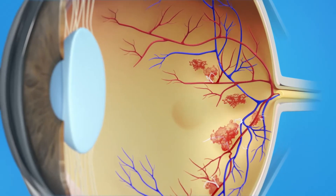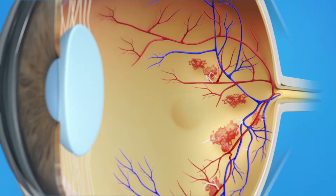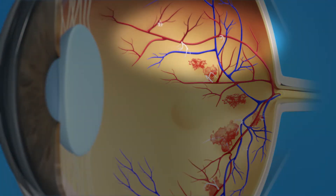Proliferative diabetic retinopathy, or PDR, is a stage of diabetic eye disease where abnormal blood vessels begin to grow on the surface of the retina. This is called neovascularization. With PDR, many blood vessels in the retina close off, keeping blood from flowing properly to the retina. The retina responds by trying to grow new blood vessels. However, these new abnormal vessels do not provide proper blood flow. They can also bleed as well as lead to scar tissue, which may cause the retina to wrinkle or even detach from the back of the eye. If similar vessels grow abnormally in the front of the eye, they can block the drainage channels and cause high pressure and possibly glaucoma. Both your central and side vision can be affected by PDR.